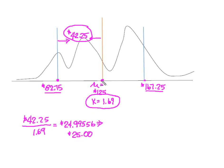So how do I know if I'm right? Well, between the mean and this point here, I moved 1.69 standard deviations. If I take 1.69 standard deviations times a value of $25 and I add it to the mean, guess what that gives me? $167.25.